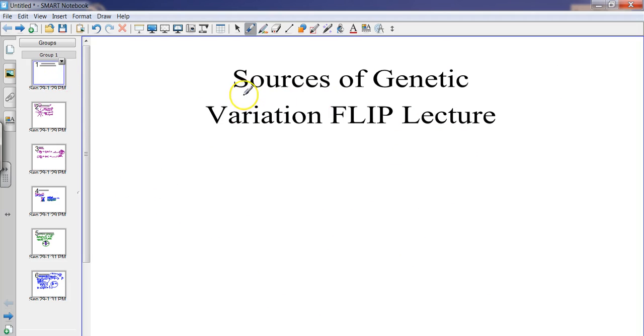All right. So that is the end of the sources of genetic variation flip lecture. This should be in your composition book. It would go on the right side because this is a source of input. And that's it. Thanks.